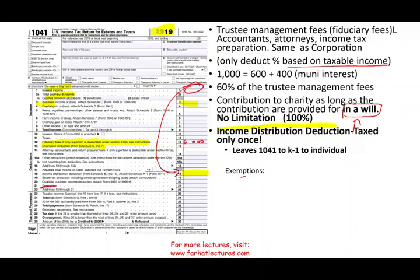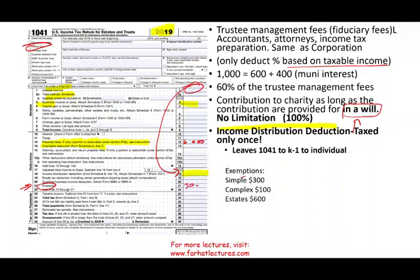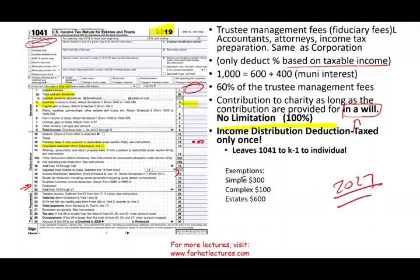The trust also has an exemption. There are three types: if the trust is a simple trust, you can deduct $300; if it's a complex trust, it's $100; and if it's a decedent's estate, it's $600. These exemptions have been the same for years, but adjust accordingly if they change.